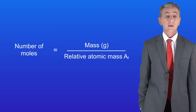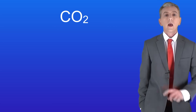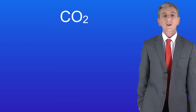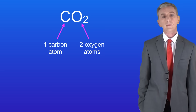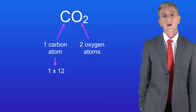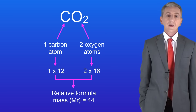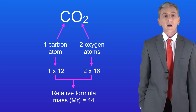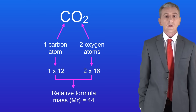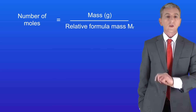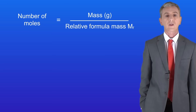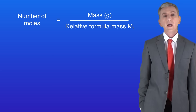In this video we're going to learn how to calculate the number of moles of a compound. To do this we need to revise the idea of relative formula mass. This shows the compound carbon dioxide — one atom of carbon bonded to two atoms of oxygen. Carbon has a relative atomic mass of 12 and oxygen has a relative atomic mass of 16. Adding these together gives us the relative formula mass of carbon dioxide, which is 44. The symbol for relative formula mass is MR, and remember it has no unit. The equation is: number of moles equals mass in grams divided by the relative formula mass MR — very similar to before, except we now divide by relative formula mass rather than relative atomic mass.